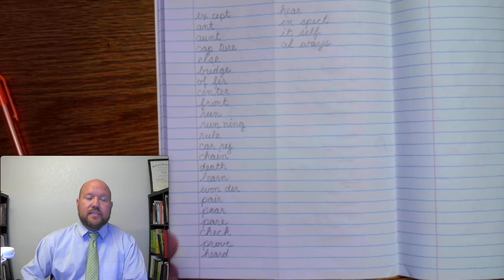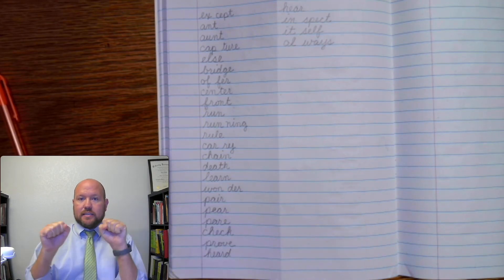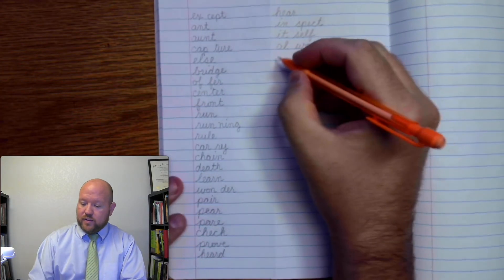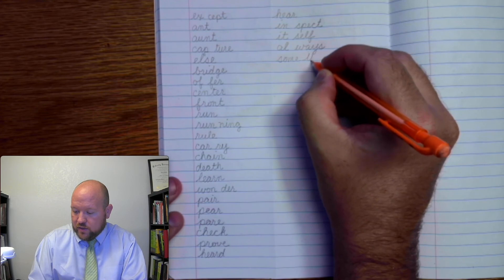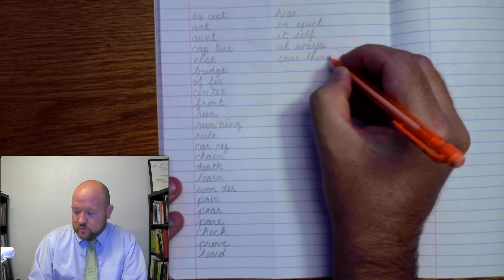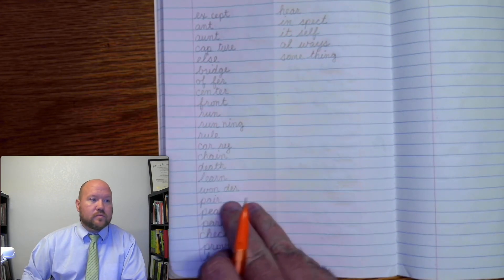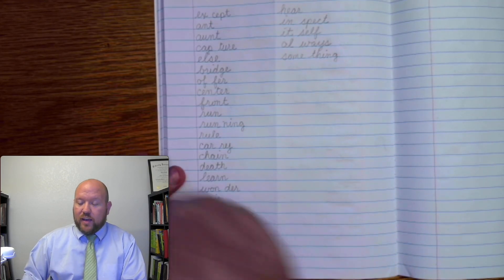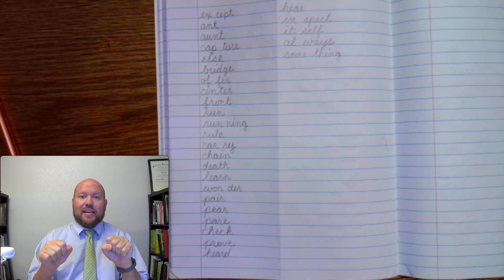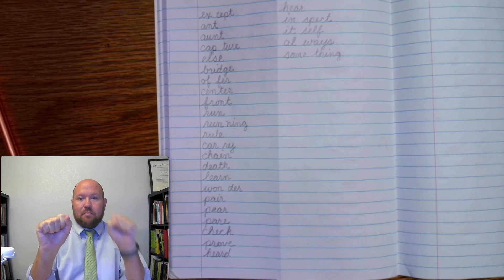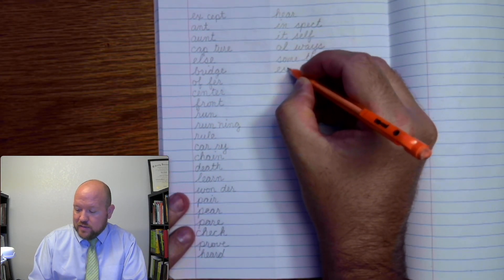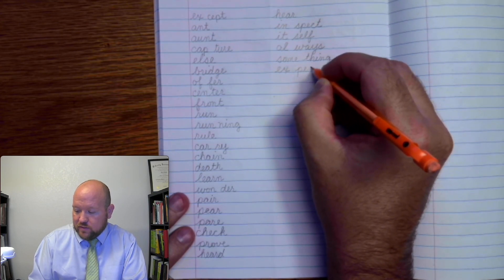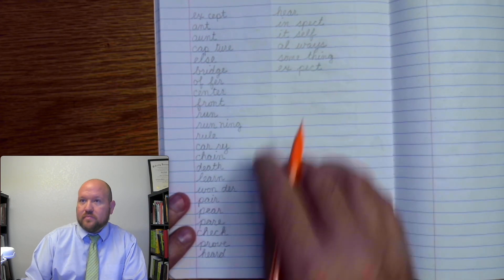Next is something. Something. Something. Some. Thing. Thing. Some. Thing. Next one. Expect. Expect. Ex-pect. Ex-pect. Ex-pect. Ex-pect.